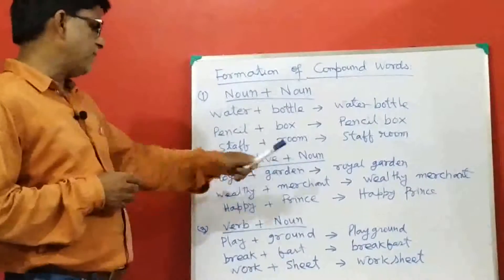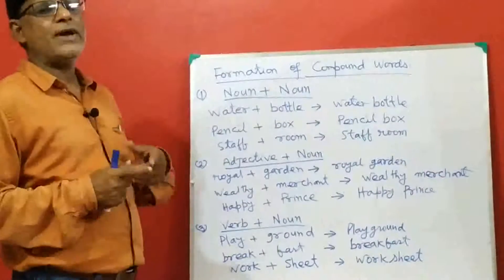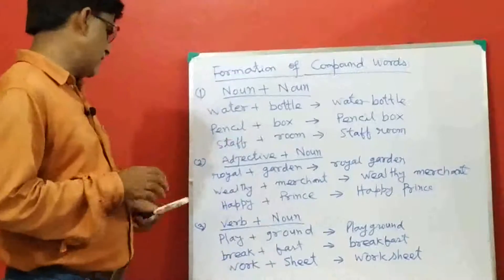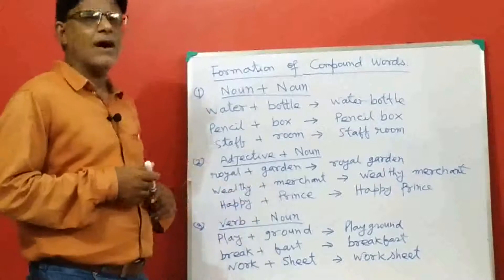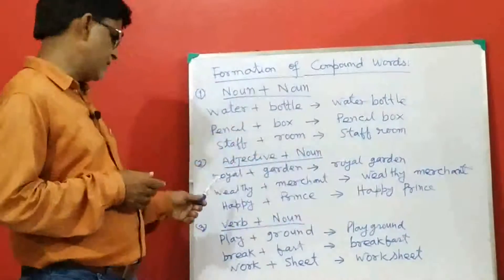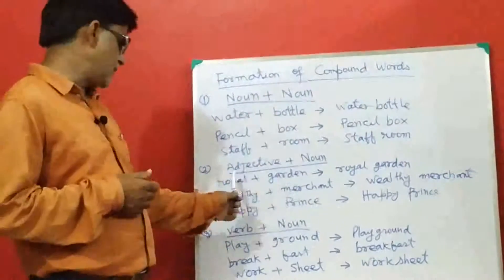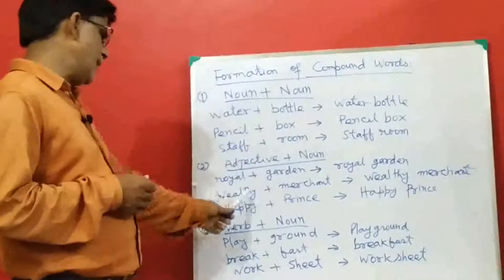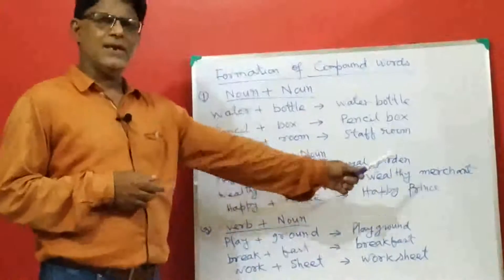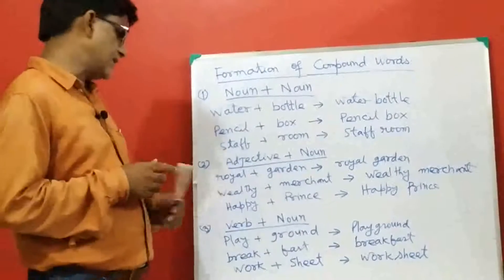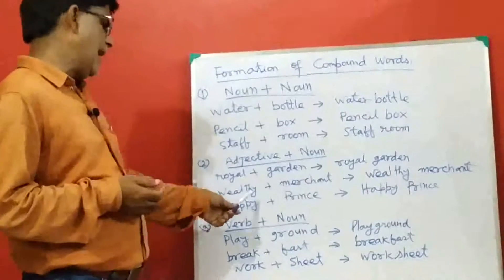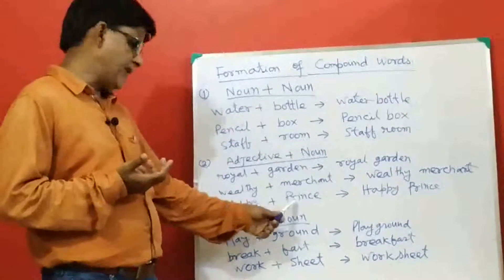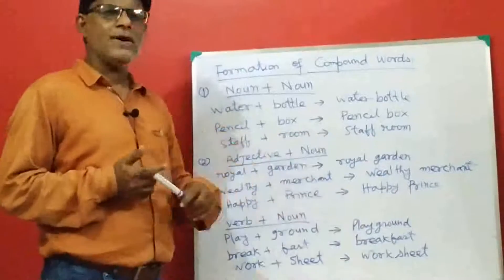Second: adjective plus noun — compound words formed by joining one adjective to one noun. For example, royal plus garden gives royal garden; royal is an adjective and garden is a noun. Similarly, wealthy plus merchant gives wealthy merchant; wealthy is an adjective and merchant is a noun. And happy plus prince gives happy prince; happy is an adjective and prince is a noun.